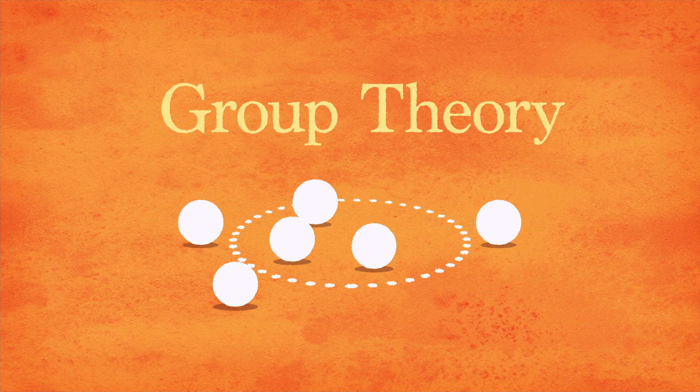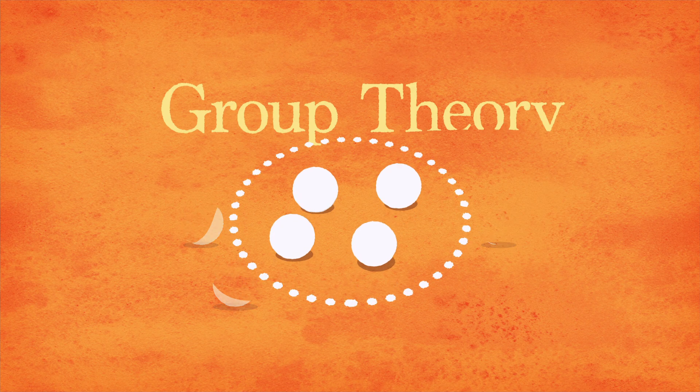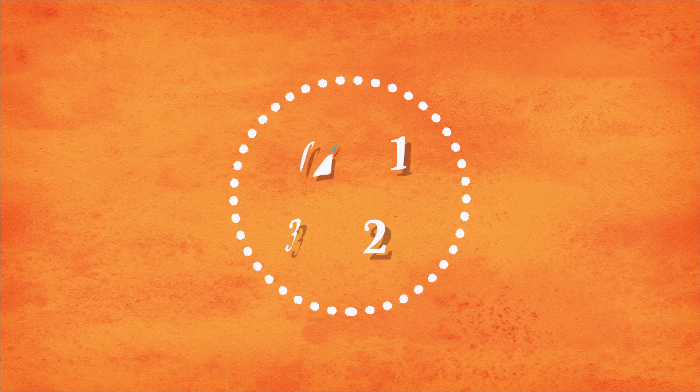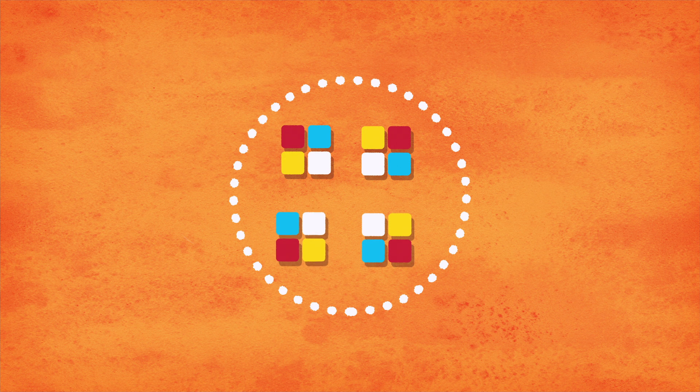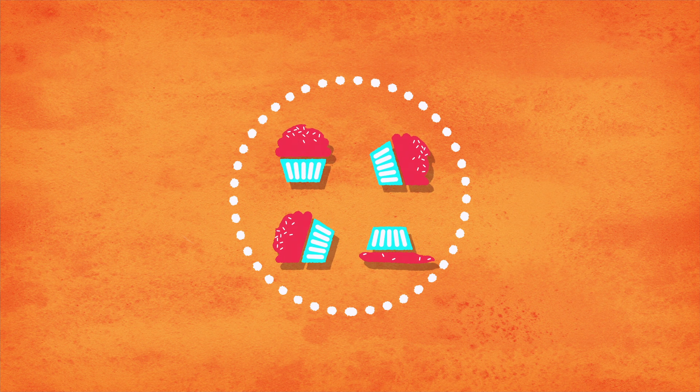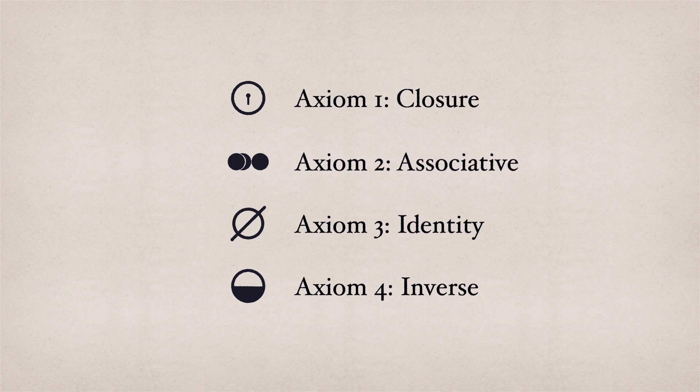In math, a group is a particular collection of elements. That might be a set of integers, the face of a Rubik's Cube, or anything, so long as they follow four specific rules, or axioms.